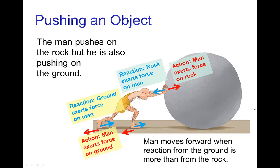Another example of action-reaction in character animation is when a character pushes on an object. When a character — say, a man pushing on a rock — exerts a force on the rock, the rock exerts a reaction force back on him. If that were the only force on him, he would move backwards. But he also exerts force with his feet to remain in place.